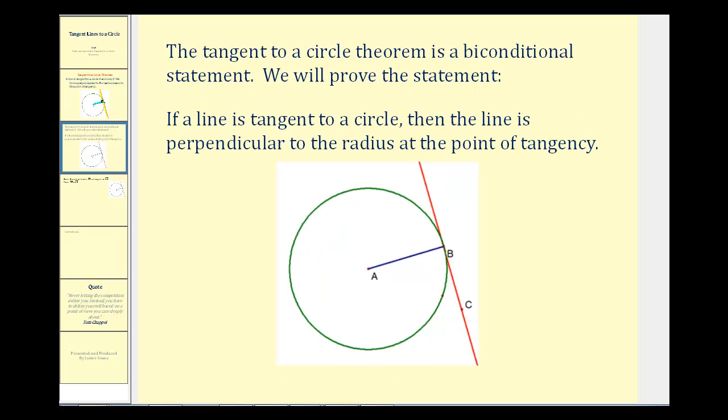In this video, we're going to prove it in one direction: if a line is tangent to a circle, then the line is perpendicular to the radius at the point of tangency. We're going to prove this using an indirect proof, which means we'll assume they are not perpendicular and then contradict the assumption.